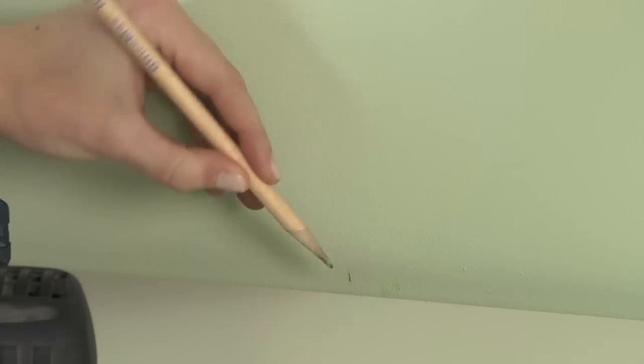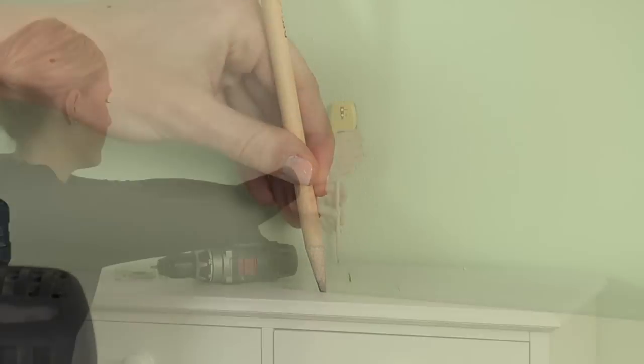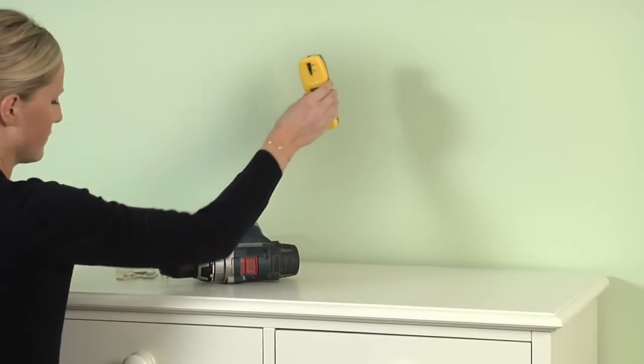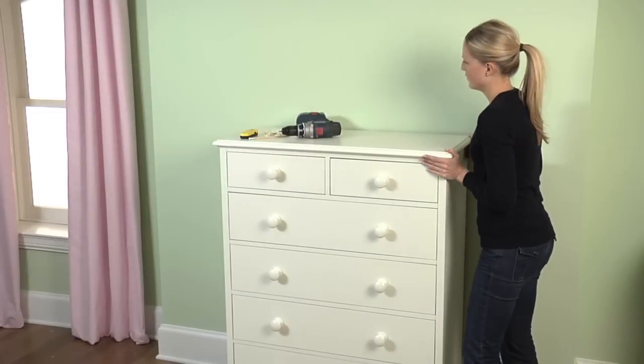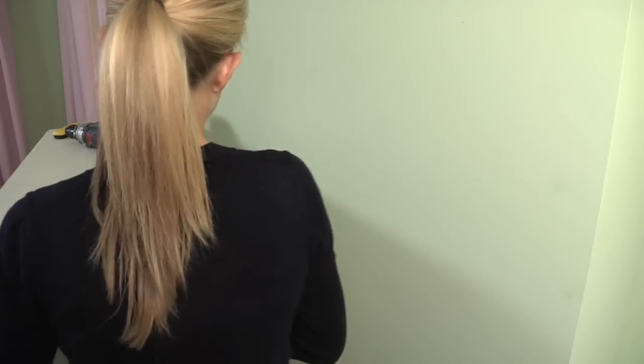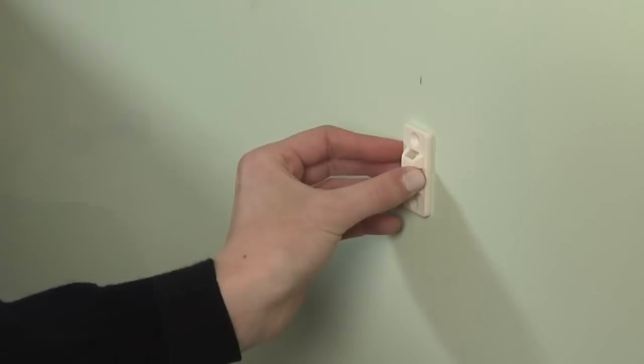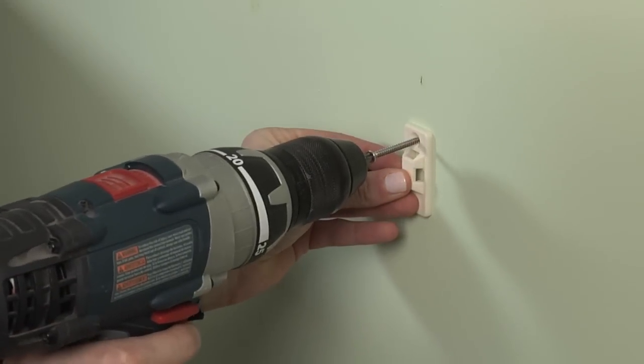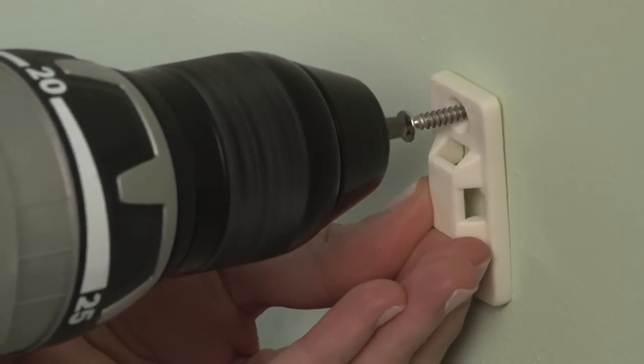Also mark the back of the furnishing at the same height. Move the furnishing away from the wall. Attach one bracket vertically to the wall approximately two inches under your pencil mark using the provided screws.